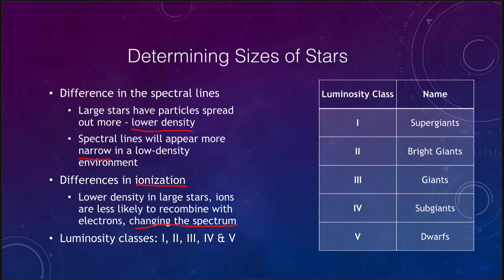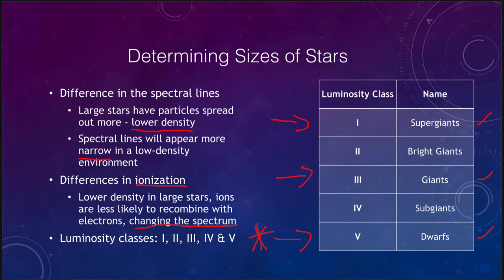Based on this, astronomers have made five luminosity classes to go with the spectral classes. The primary three are supergiant stars class one, giant stars class three, and dwarf stars class five. Most of the stars we will see are dwarf stars — our own sun would be classified as a dwarf. Just because something is classified as a dwarf does not necessarily mean it is small; it simply refers to the luminosity class based on the spectrum.